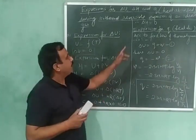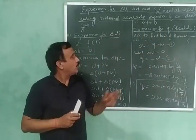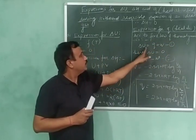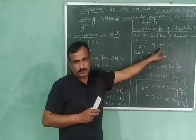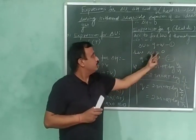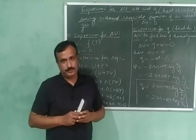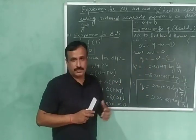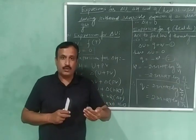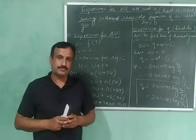Now let us discuss the expression for the heat absorbed. According to the first law of thermodynamics, delta U is equal to Q plus W. Since delta U is equal to zero, Q is equal to minus W. This means that the heat absorbed by the system is completely converted into work.